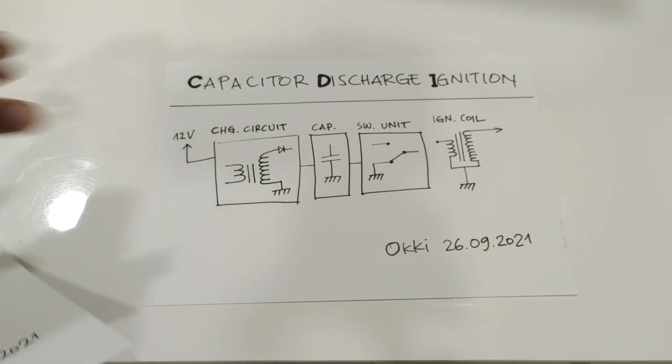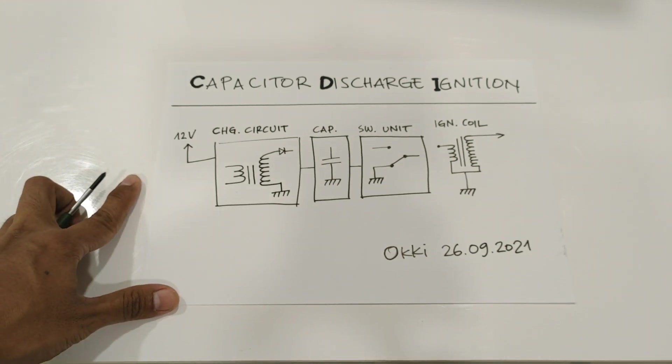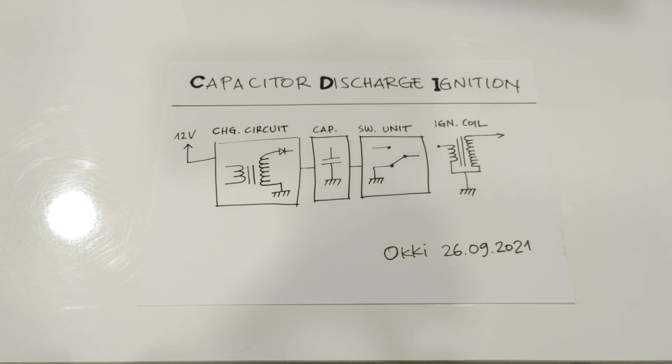And now here you can see my CDI block diagram. This CDI module consists of three main parts.